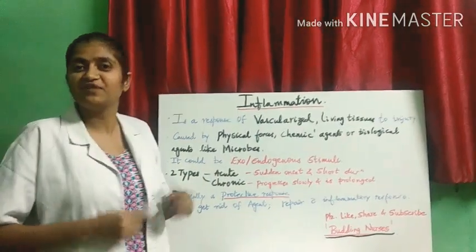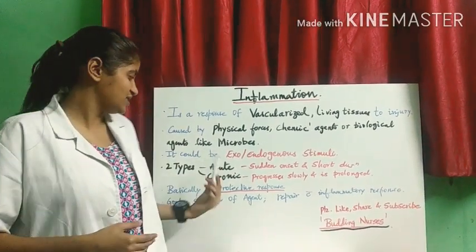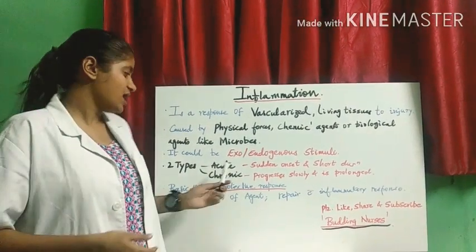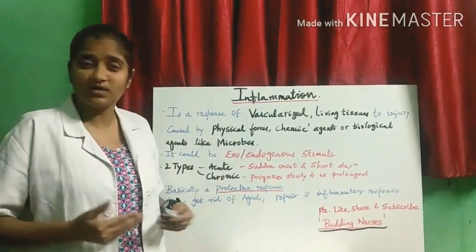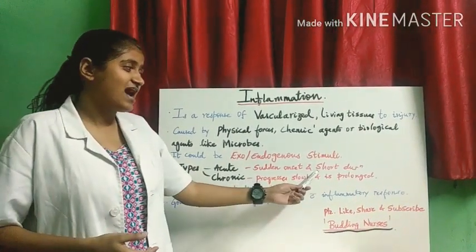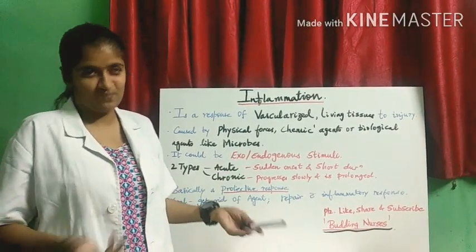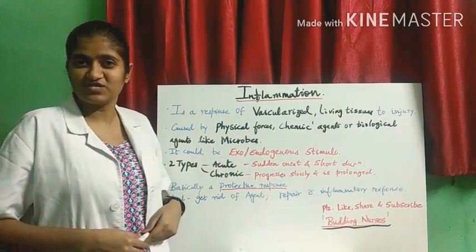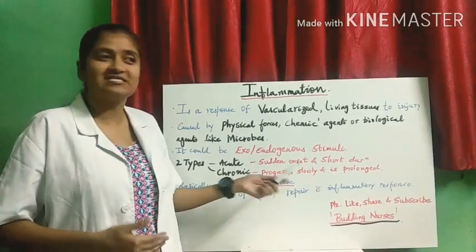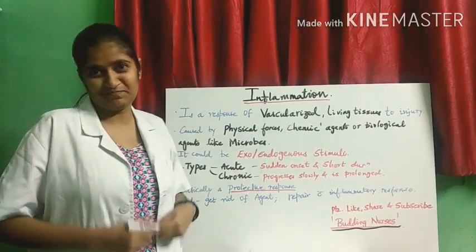There are two types of inflammation. One is acute and another one is chronic. Acute inflammation has a sudden onset and lasts for a short duration of about a week or so. Chronic inflammation is the type which progresses slowly and persists for a prolonged period of time.